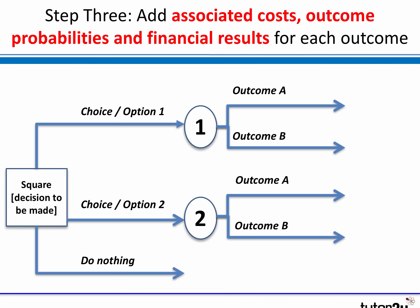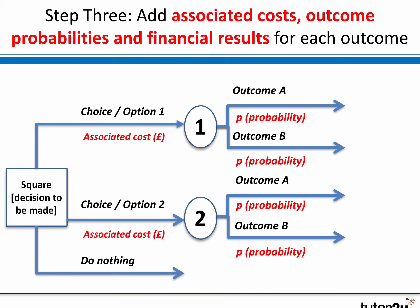Step three is we then add in the information. It's most likely that a lot of this will be provided to you already if it's a partially complete decision tree. We add in the cost of each option. Then for each outcome there are two pieces of information: the probability that it will happen, and the result if it happens. We multiply the probability by the result to work out the expected value.